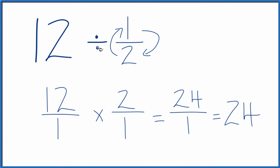So when we divide 12 by 1 half, we end up with 24. If you multiply 24 by 1 half, you end up getting 12 again. So we know we did this correctly.